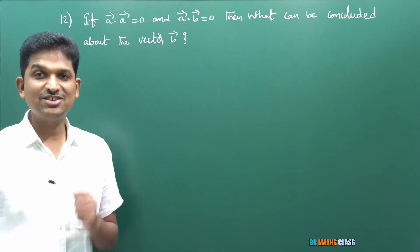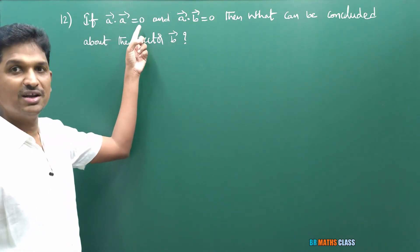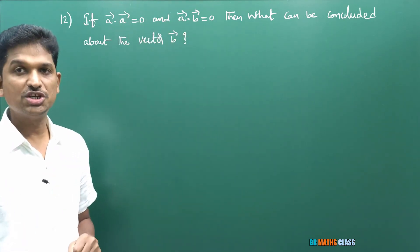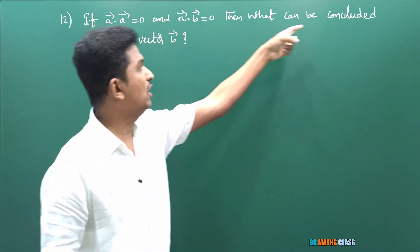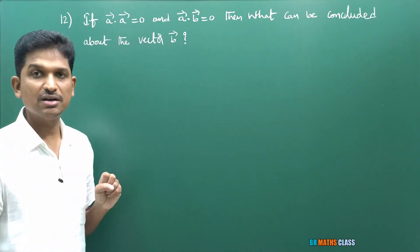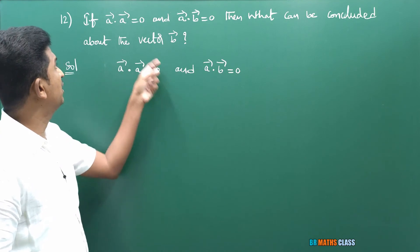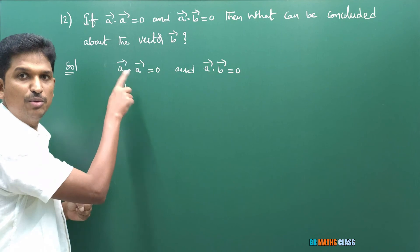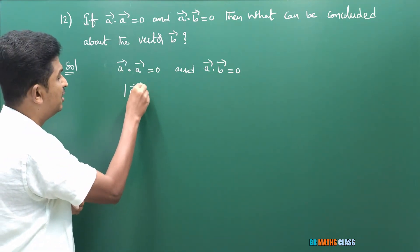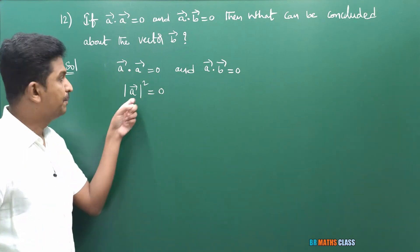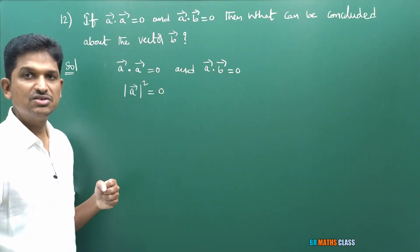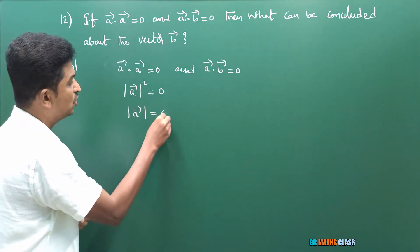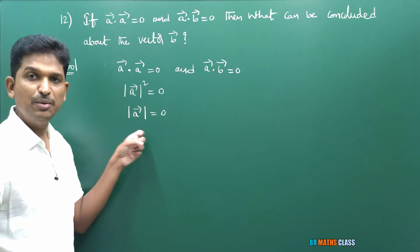This is the last question for this class. Given: a̅ · a̅ = 0 and a̅ · b̅ = 0. We know the formula a̅ · a̅ = |a̅|². So |a̅|² = 0, which means |a̅| = 0. This tells us that a̅ is a zero vector.